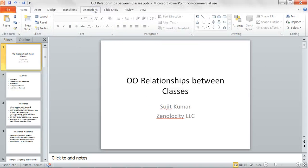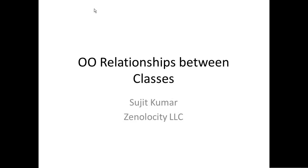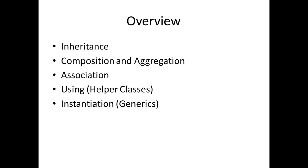In this class, we will discuss the different kinds of relationships between classes in object-oriented analysis and design. The different kinds of relationships in object-oriented programming are inheritance, composition and aggregation, association, using helper classes, and instantiation with generics. Let's go into each of these.